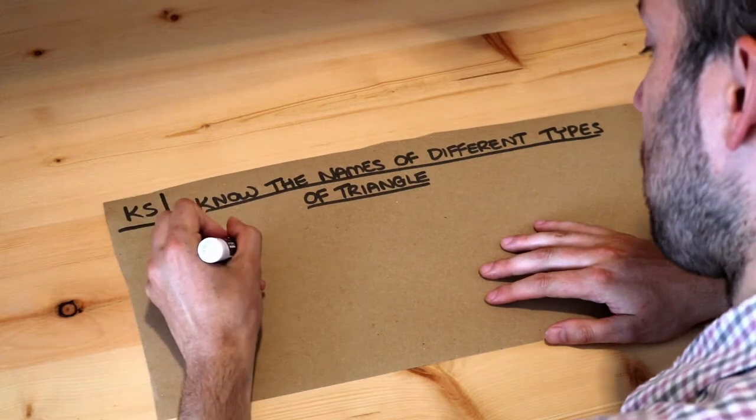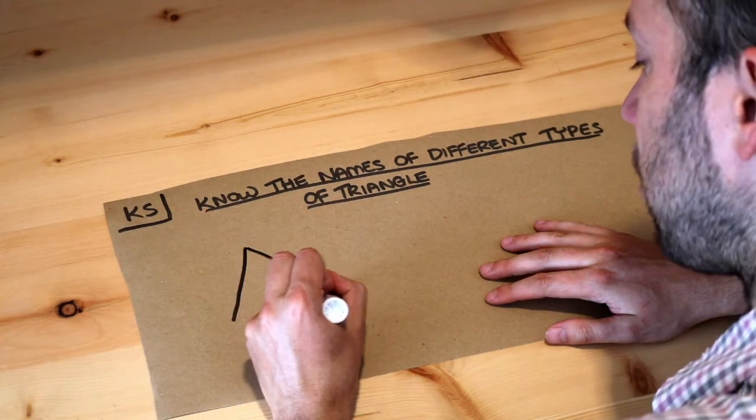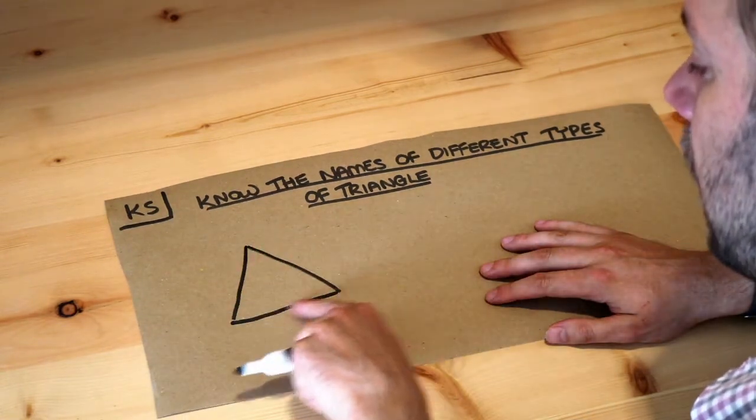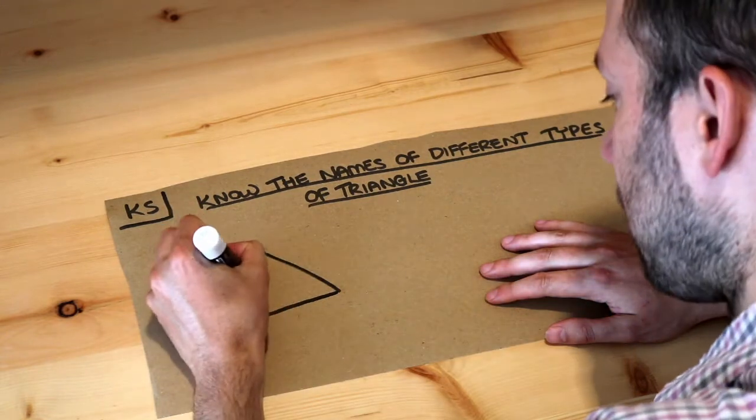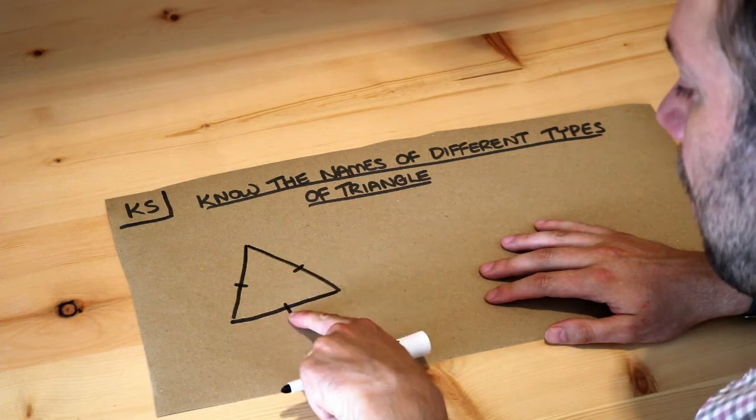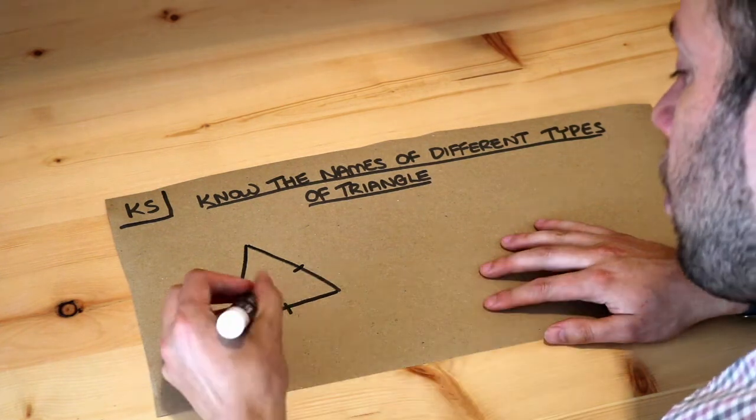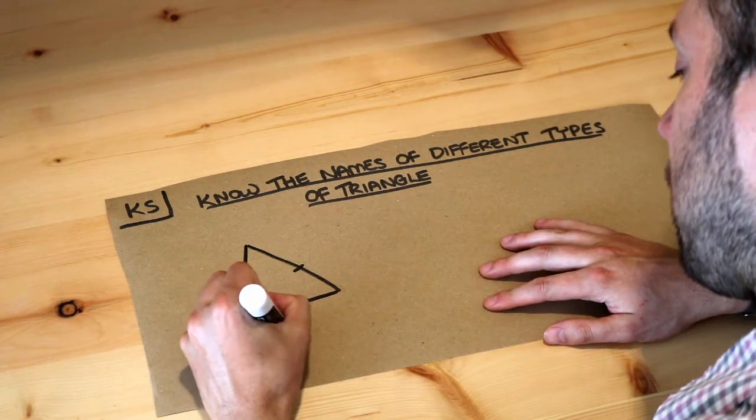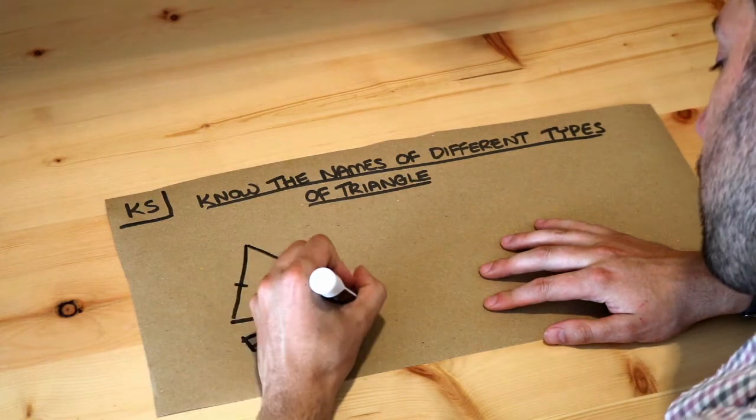If you have a triangle—remember, a triangle has three straight edges—and let's just say all the sides are the same length, and sometimes we use a little mark to indicate that this length is the same as this length is the same as this length, then it's known as an equilateral triangle. Note the spelling.